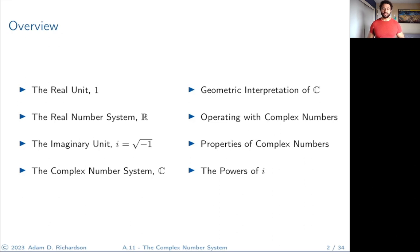Here's the overview: we're going to start by reviewing the real unit, that's the number one. We'll review the real number system, then talk about the imaginary unit i, defined as the square root of negative one. Then we'll cover the complex number system, its geometric interpretation, operating with complex numbers, properties of complex numbers, and the powers of i.